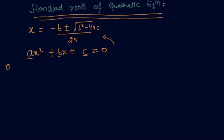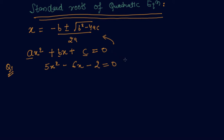We will check directly by this formula. Our equation is 5x square minus 6x minus 2 equal to 0. In the last video we saw this question using the completing square method, but in this video we will solve it by simply using the formula.